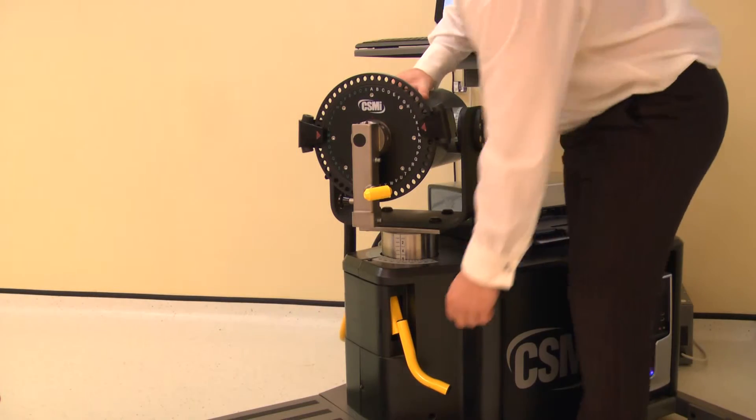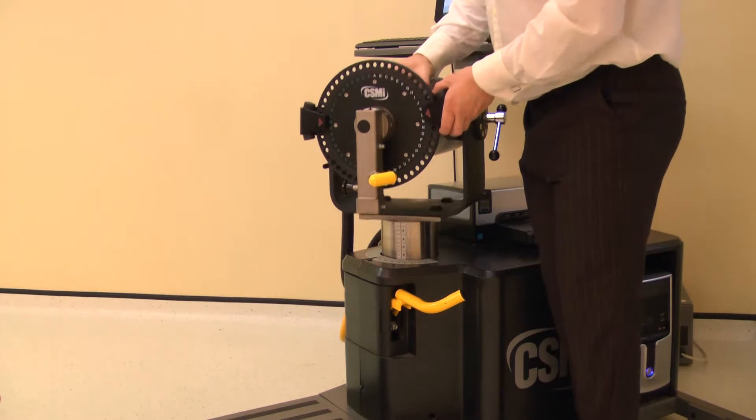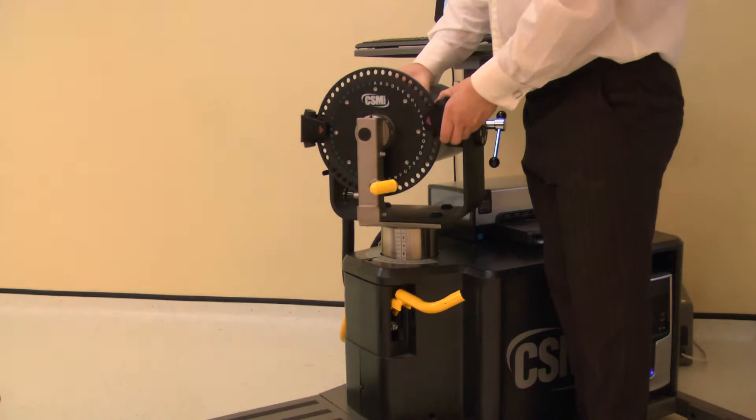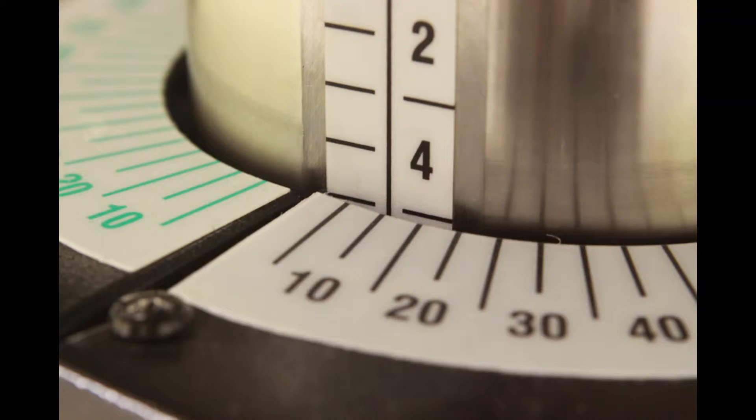The dynamometer height and rotation are adjusted together. Lift the locking handle to release. Rotate the dynamometer to 10 degrees on the black scale, then adjust the height to 5. Ensure both locking handles are pushed down to secure.